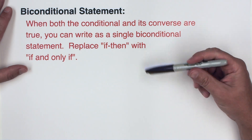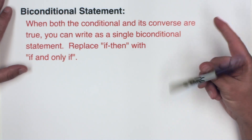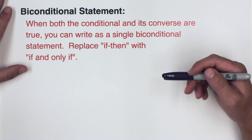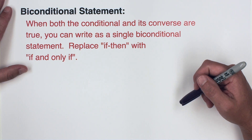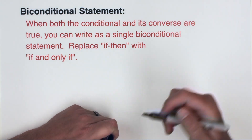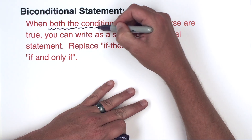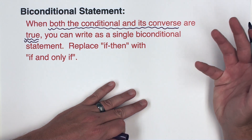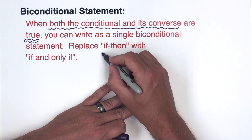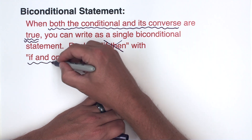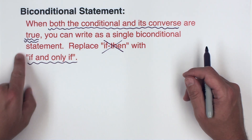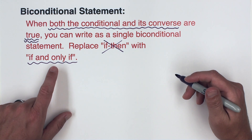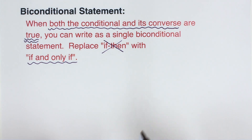The final topic in this video is the biconditional statement. A biconditional statement can replace the conditional and the converse when both are true statements. When that's the case, you replace the if-then with if and only if. So when you read if and only if, you can imply that both the conditional and its converse are true.